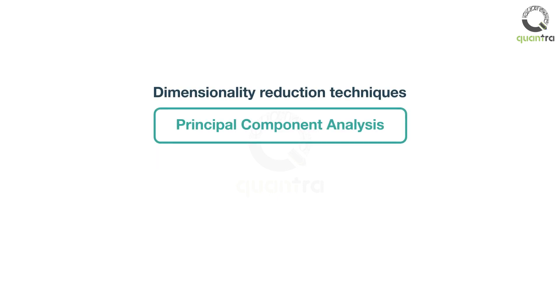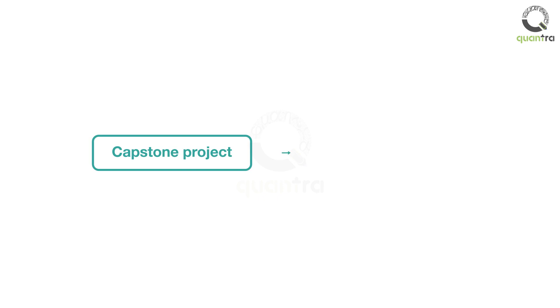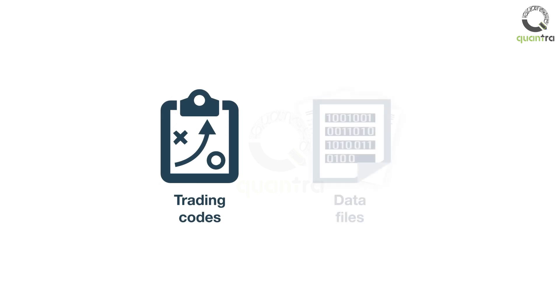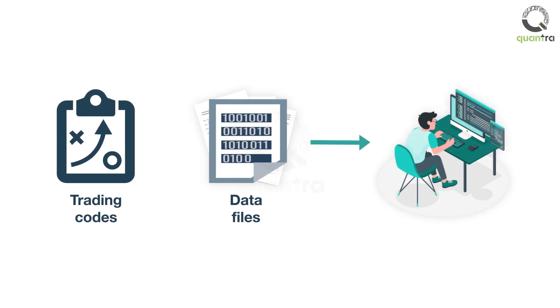Further, one of the most popular dimensionality reduction techniques — namely, principal component analysis — is covered in great detail. This is then used along with the DBSCAN algorithm to select pairs for a pairs trading strategy. The course also has a capstone project so that you can assimilate and apply your learnings. All the strategy codes and data files will be provided to you in the last section of the course, and you can use them to tweak and modify the code to truly make it your own trading strategy.